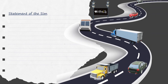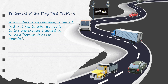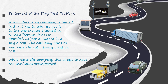Let us understand by considering the following problem: a manufacturing company situated in Surat has to send its goods to the warehouses situated in three different cities — Mumbai, Jaipur, and Indore — in a single trip. The company aims to minimize the total transportation cost. What route should the company opt for to have the minimum transportation cost?